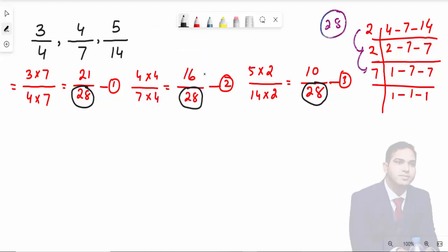First, you can see that the minimum numerator is 10, so 10 over 28 comes first, then 16 over 28, and then 21 over 28. When arranging in ascending order, start from the minimum to highest number: 10, 16, 21. The value 10 comes from the fraction 5 over 14, so first is 5 over 14. Then 16 comes from 4 over 7, so second is 4 over 7. The third fraction is 3 over 4. This is ascending order.